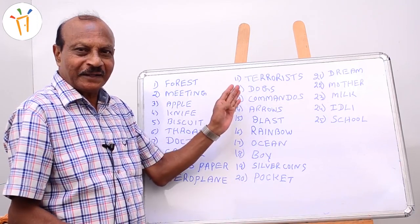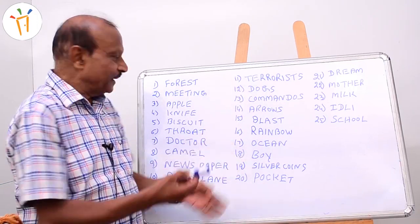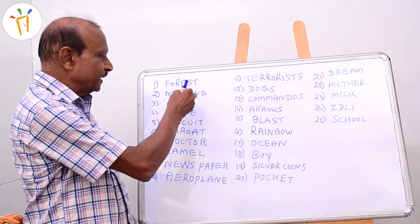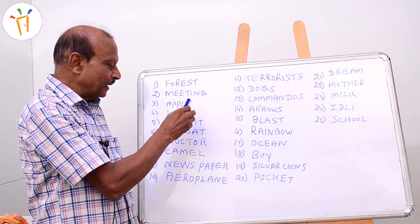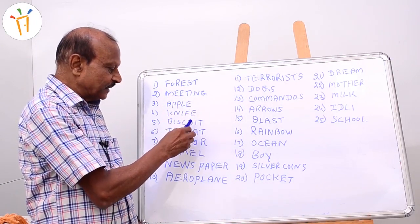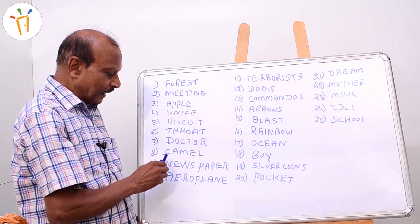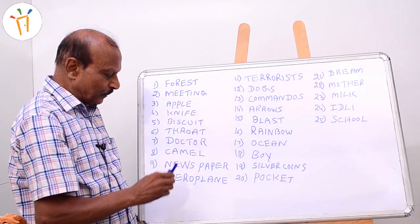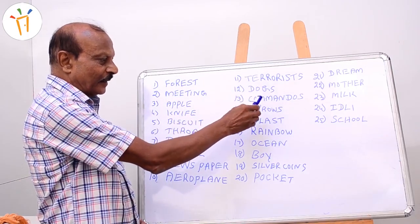Let me repeat the words once again. The first word is forest, then meeting, apple, knife, biscuit, throat, doctor, camel, newspaper, aeroplane, terrorists.